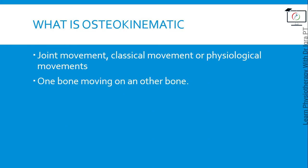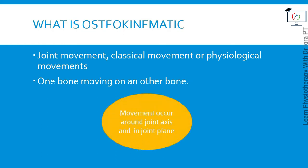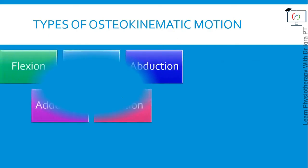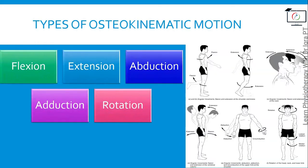As we have studied in our plane and axis lecture, the movement of the bone occurs around the joint axis and within the joint plane. To revise these, check out my lecture on planes and axes of the human body. Osteokinematics motion includes normal physiological movements like flexion, extension, abduction, adduction, and rotation. To study these movements in detail, check out my lecture number six of general anatomy.